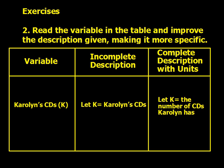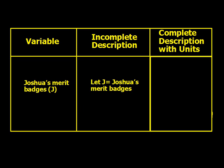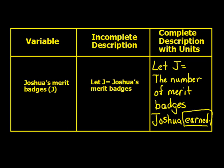For Carolyn's CDs, K: let K equal the number of CDs Carolyn has, or the number of CDs in her collection. For Joshua's merit badges, J: let J equal the number of merit badges Joshua has earned. At this point, go ahead and pause the video again, do the next couple on your own, and come back when you're ready.